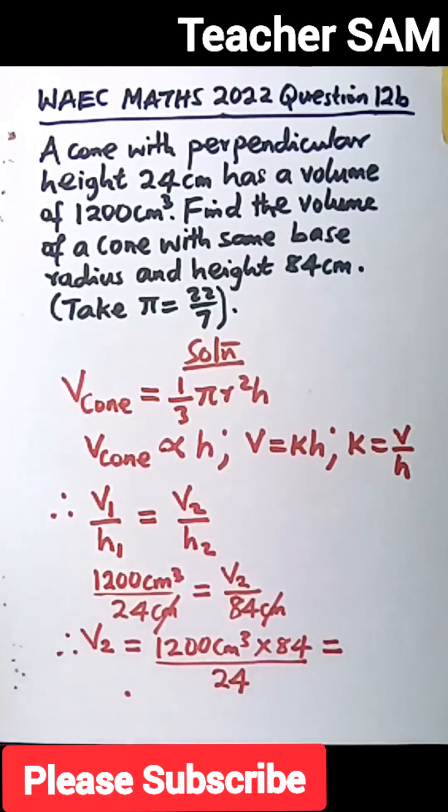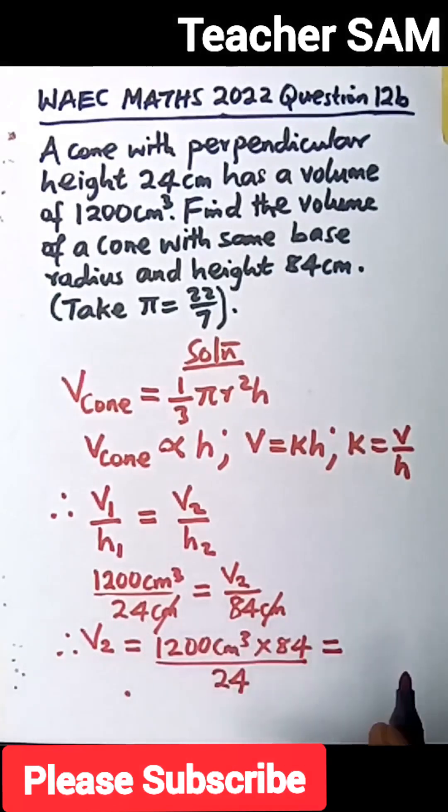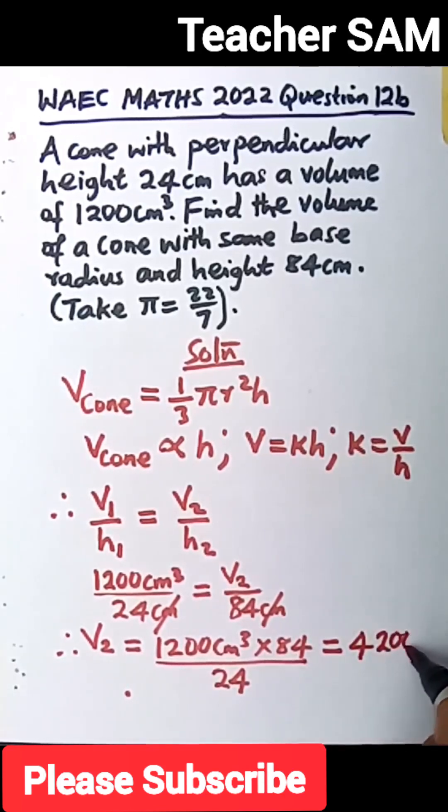If we say 1,200 times 84 divided by 24, you are going to have 4,200 cm cubed.